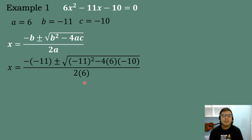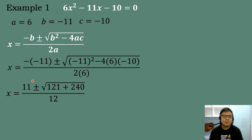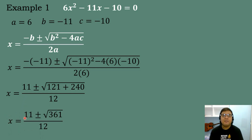We will now simplify the equation. Negative times negative 11 equals positive 11. Then, negative 11 raised to the second power: negative 11 times negative 11 equals positive 121. Negative 4 times 6 equals negative 24. Negative 24 times negative 10 equals positive 240. All over 2 times 6 equals 12. So we have 11 plus or minus the square root of 121 plus 240, which equals the square root of 361, all over 12.